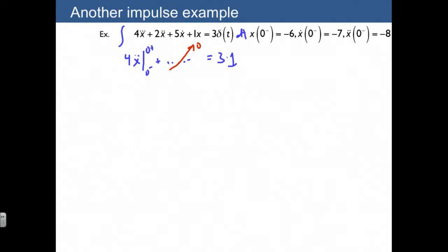What we end up with is the relationship 4 times [x double dot at time 0 plus minus x double dot at time 0 minus] quantity equals 3, which means that x double dot of 0 plus is just going to be equal to x double dot of 0 minus, which is -6, plus 3/4.